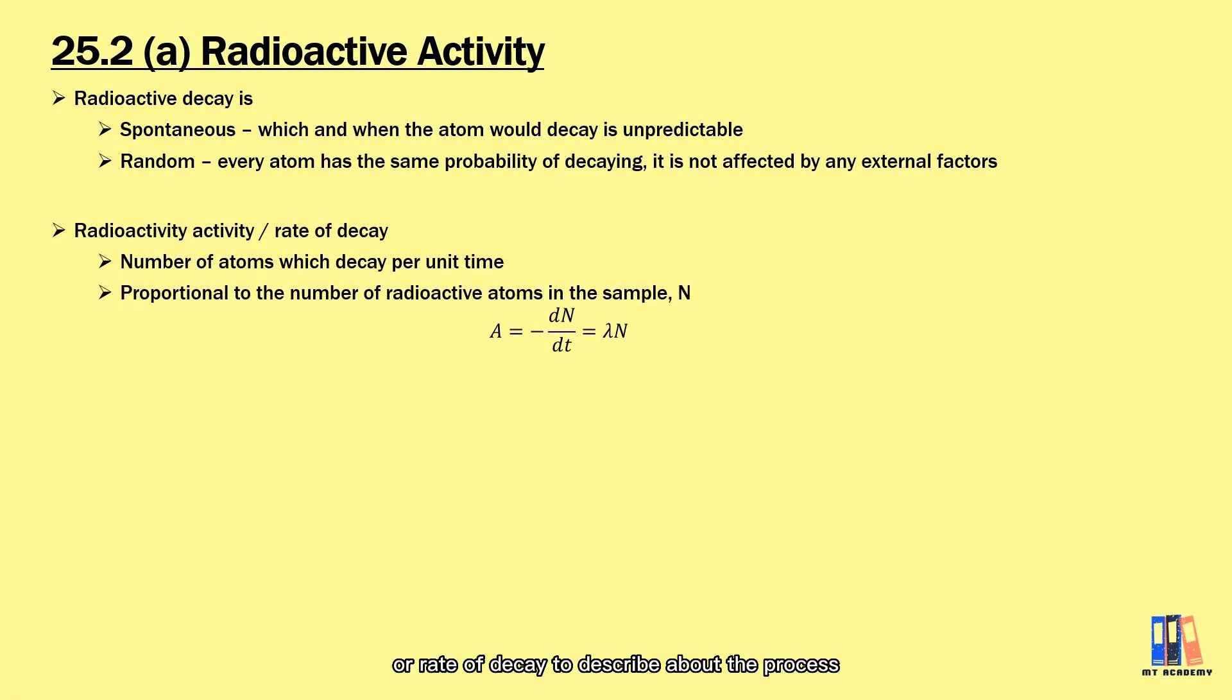We use the term activity or rate of decay to describe the process. It is defined as number of atoms which decay per unit time, and it is proportional to the number of radioactive nuclei in the sample. So it is not affected by any other factors, just the number of radioactive nuclei available in the sample.